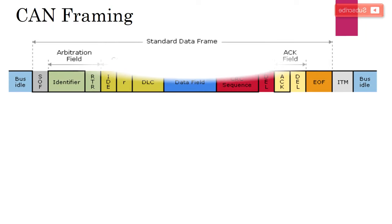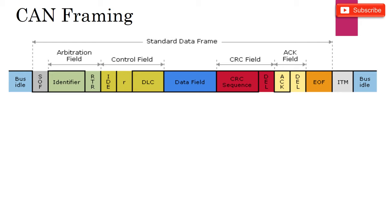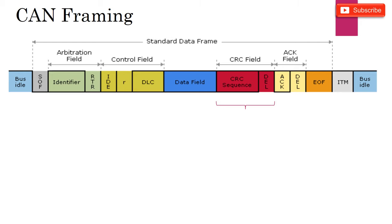Now let's start looking at the CAN frame structure from a very general perspective. We will talk about frame types later, but first we need to understand the various elements of the frame. The first element is the arbitration field, which is also called the message identifier. Then we have the control field, which defines user-defined functions. Then we have the data field, where the actual data is kept. Following that, we have the CRC and acknowledgement field. Each CAN message must also start with a start-of-frame bit and end with end-of-frame bits.